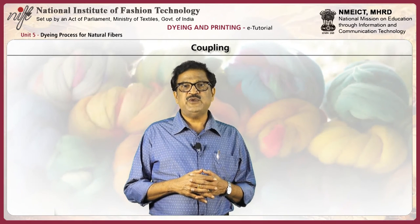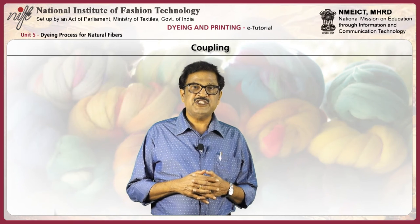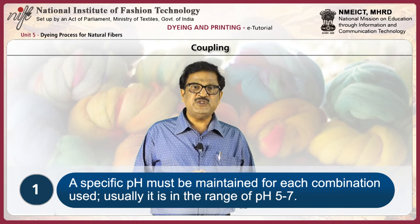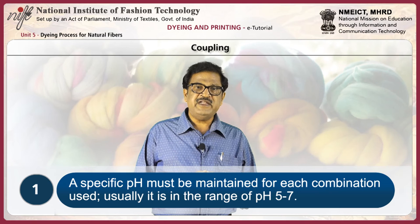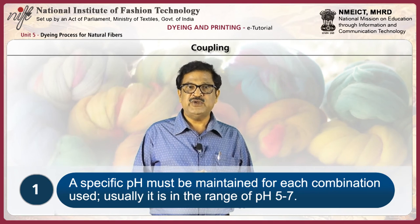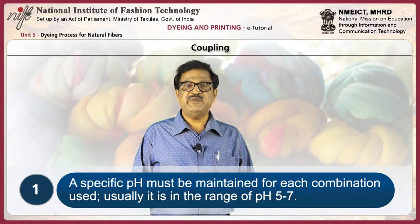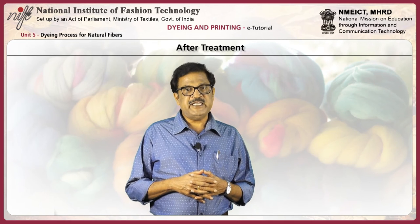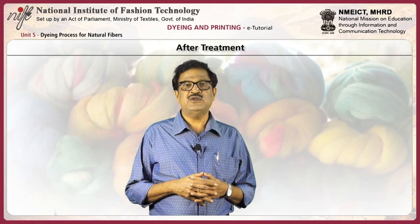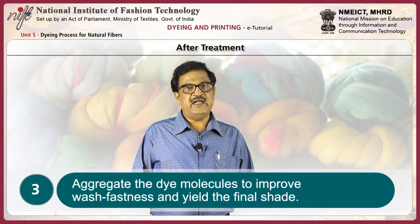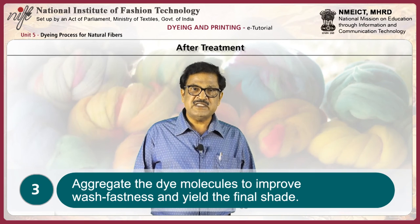Coupling: For coupling to take place at a desirable rate without affecting the stability of the naphthol or the diazonium salt, a specific pH must be maintained for each combination, usually in the range of pH 5 to 7. Often a mixture of acetic acid and sodium acetate is added to the diazonium salt solution to act as a buffer and maintain a pH of about 5. The naphthilated substrate is immersed in the diazonium salt solution at room temperature for 15 to 20 minutes, during which the coupling reaction is completed. After treatment: the dyed substrate undergoes vigorous rinsing to remove unreacted starting material, remove dye attached to fiber surface, and aggregate dye molecules to improve wash fastness and yield the final shade.